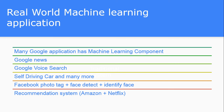Let's see some of the real-world machine learning applications. Many Google applications have a machine learning component. If you consider Google News, Google is fetching news from a lot of different news websites and the machine learning system automatically clusters similar kinds of news, putting them into one place — this all happens because of machine learning algorithms. Google Voice Search is now at more than 80 percent accuracy, using deep learning technology, which is a subfield of machine learning.